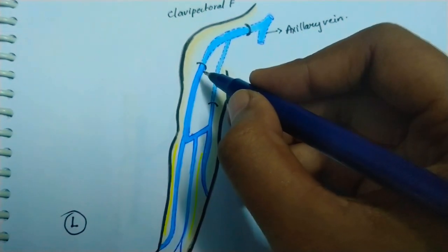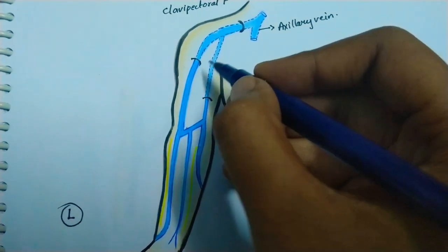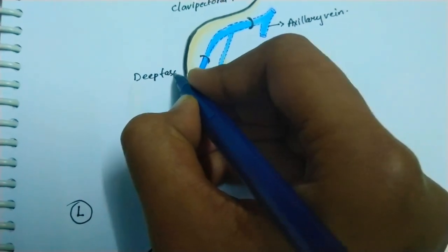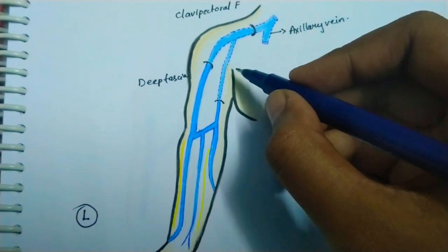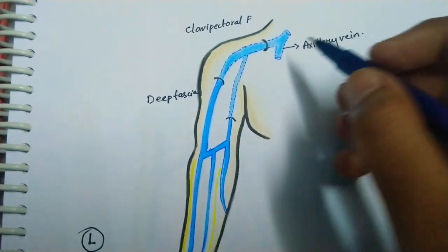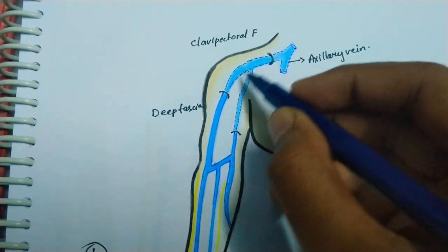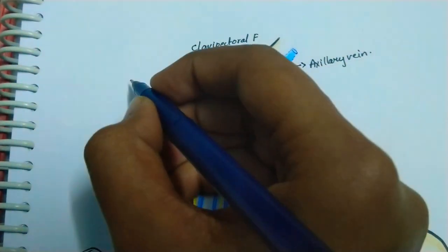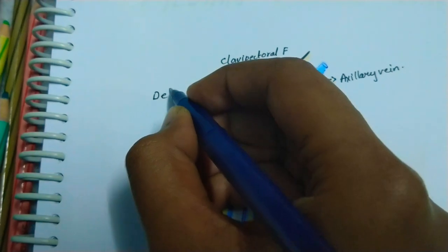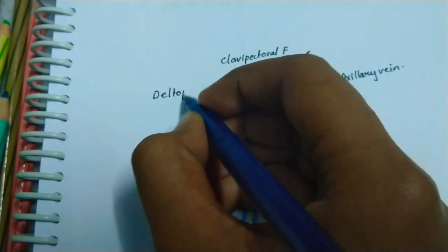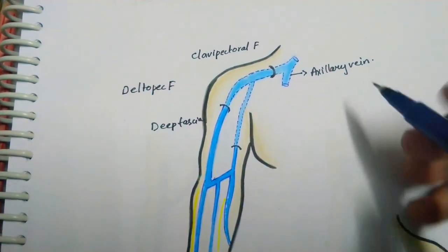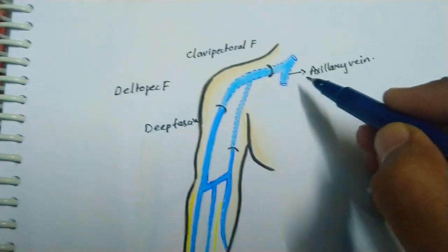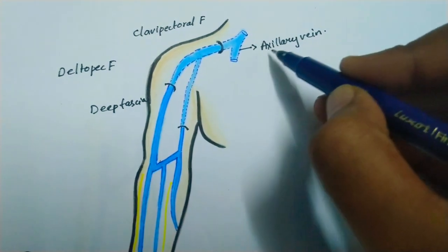Then it pierces the deep fascia at the lower border of the pectoralis major muscle, and then it runs in the cleft between the pectoralis major and the deltoid muscle. So this is called the deltopectoral fascia. Then it pierces the clavipectoral fascia and drains into the axillary vein.